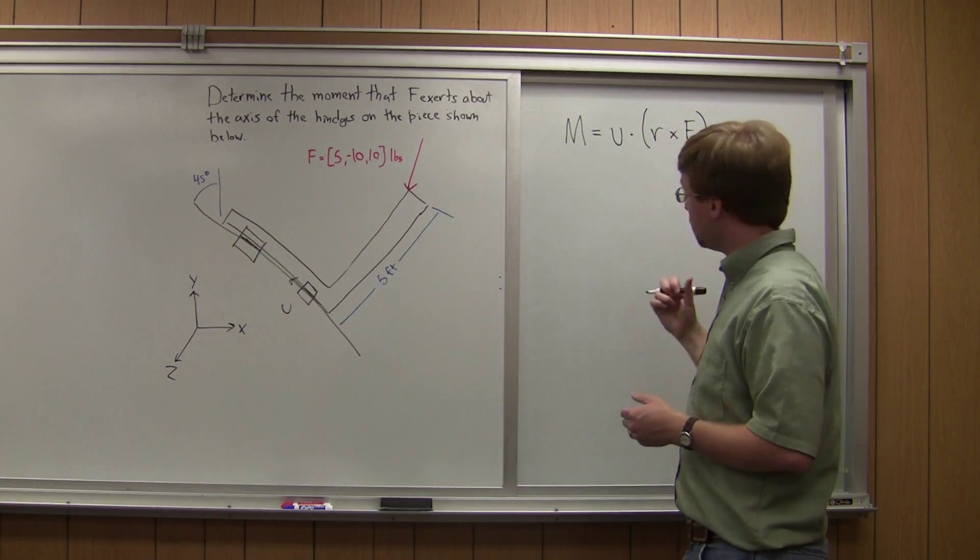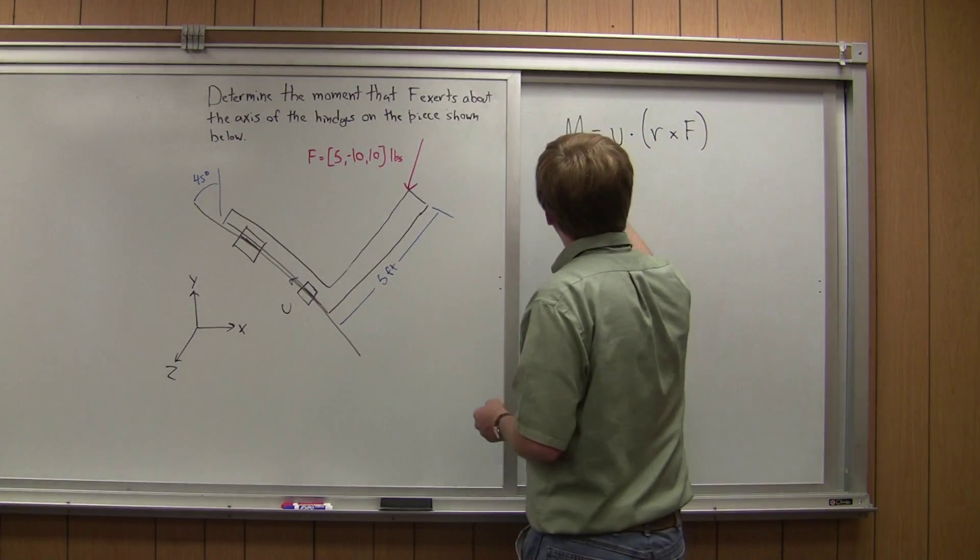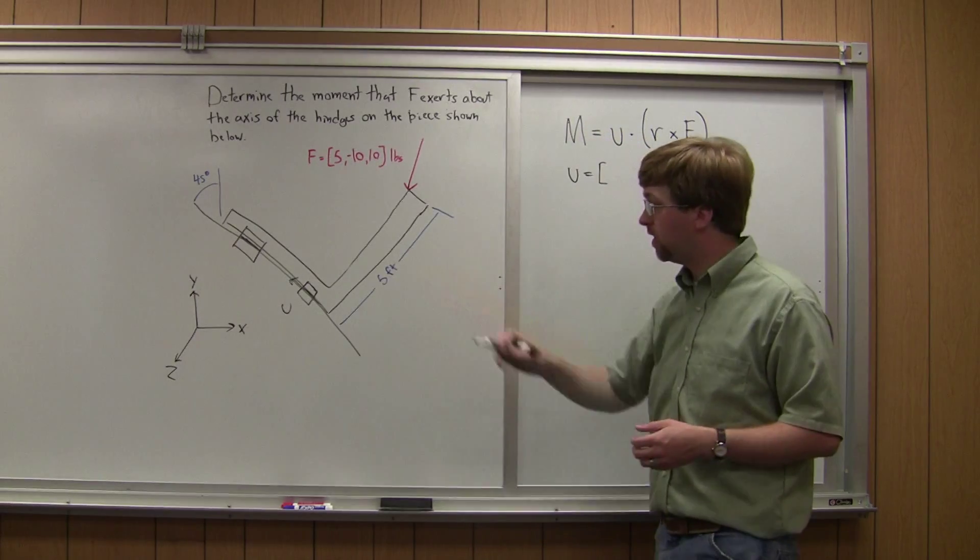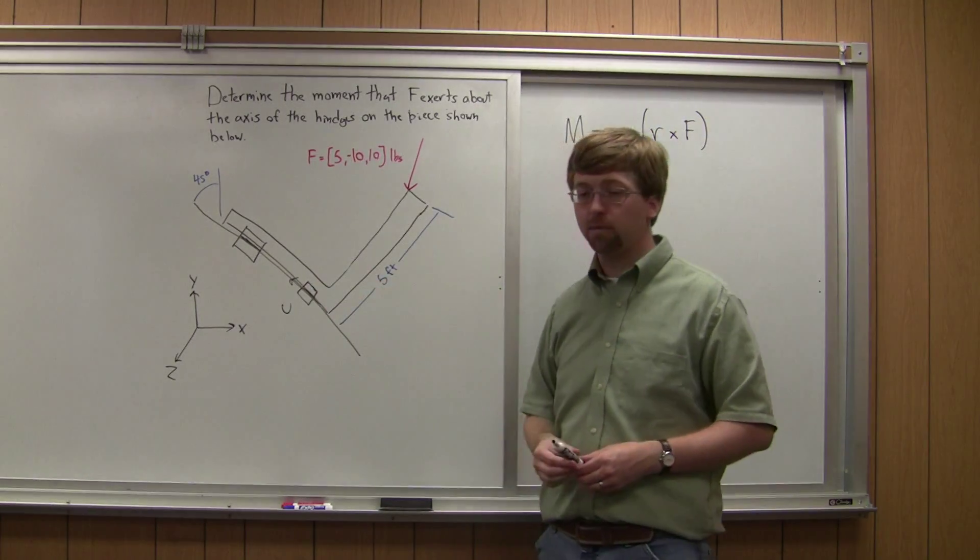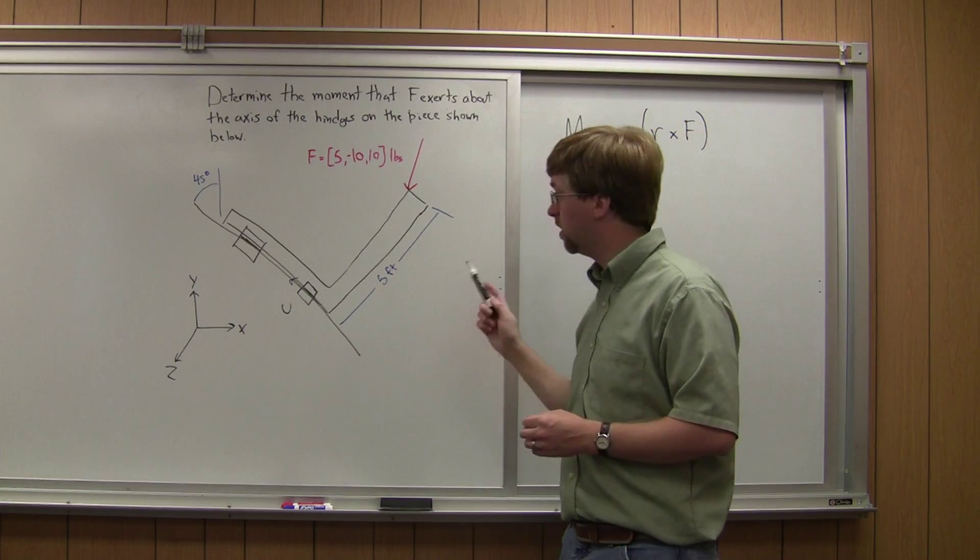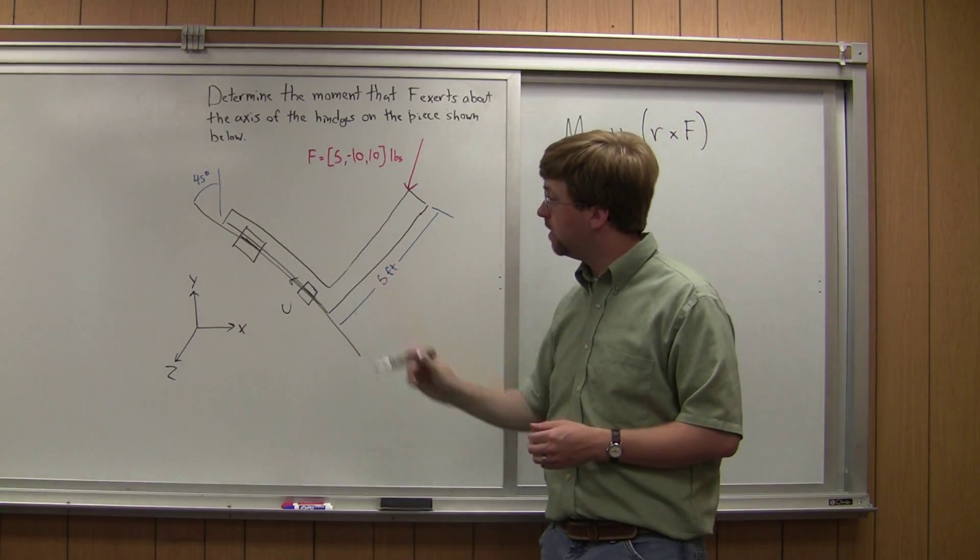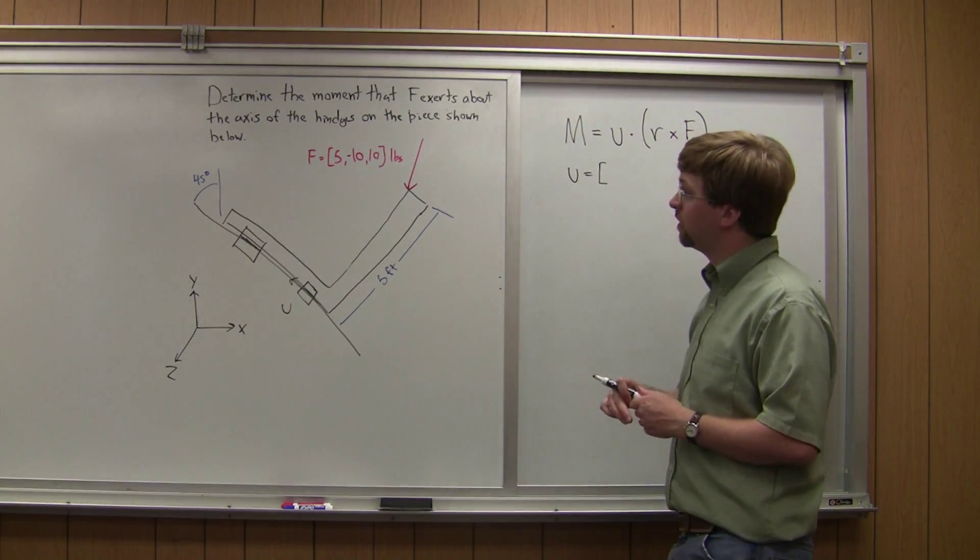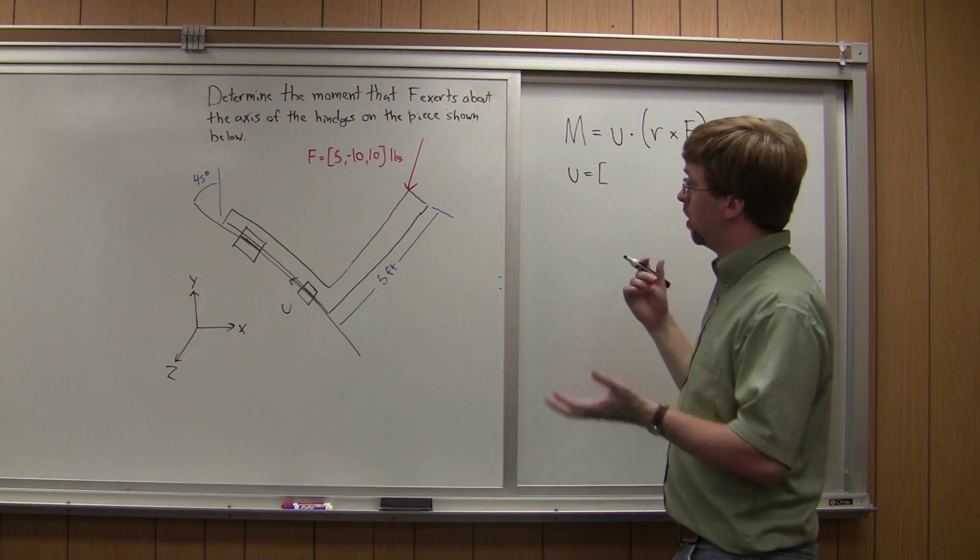So in this case U, we know it's in the xy plane since this whole thing is sitting in the xy plane right now. And it's going to be going negative cosine 45 in the x direction.